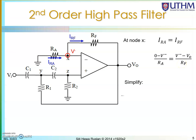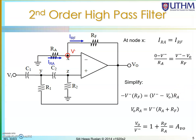Simplifying further, you get that the ratio of Vo over V-minus equals 1 plus Rf over Ra, which is the gain for the circuit. This is for a non-inverting amplifier, which is why Vo equals 1 plus Rf over Ra.